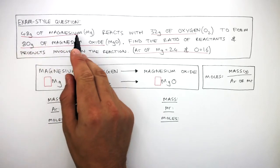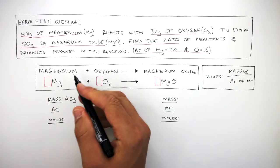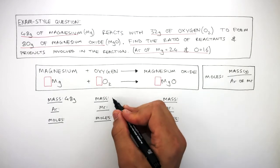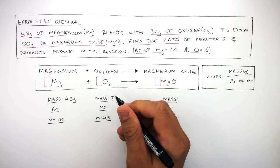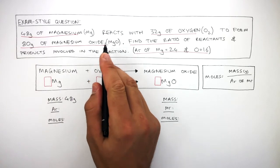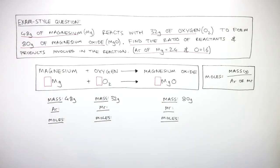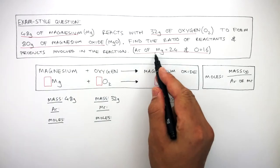So 48 grams of magnesium means we write 48 grams next to magnesium. 32 grams of oxygen means we write 32 grams next to the mass underneath oxygen. And 80 grams of magnesium oxide means we write 80 grams next to the mass under MgO.